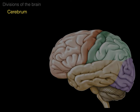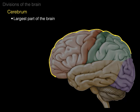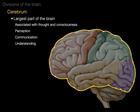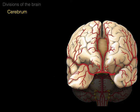We'll begin with the cerebrum, which is Latin for brain because it's the largest part of the brain. It's located here in the yellow outline. The cerebrum is associated with thought and consciousness and other higher-order elements of thinking like perception, communication, understanding, and memory.